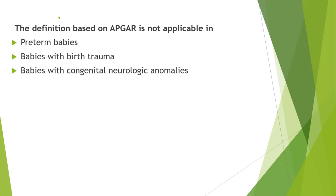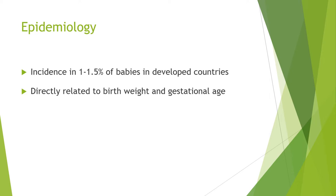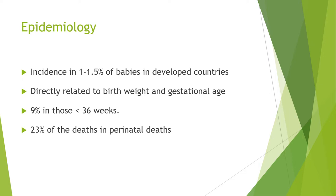When we see the epidemiology of perinatal asphyxia, the incidence ranges from 1 to 1.5 out of 100 newborns. This is mostly in developed countries; in developing countries it is more than this. This is directly related to birth weight and gestational age. Perinatal asphyxia is more common in preterm babies, ranging around 9 percent in those less than 36 weeks, and 23 percent of those who have perinatal asphyxia die within the first months of life.